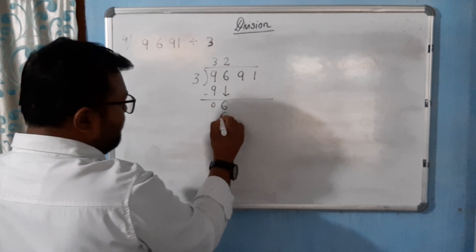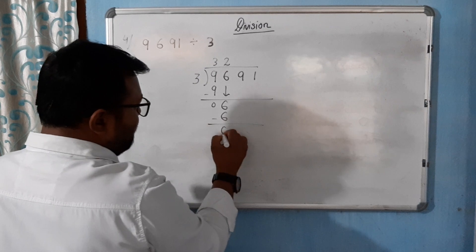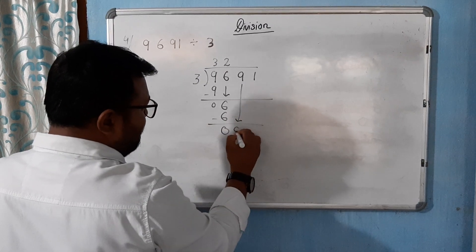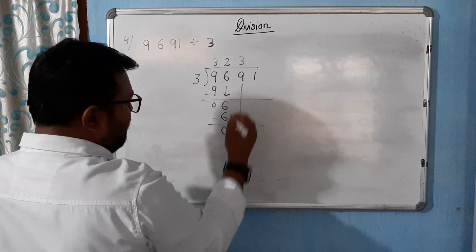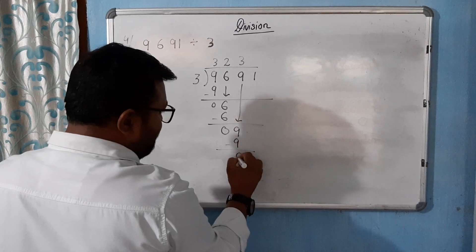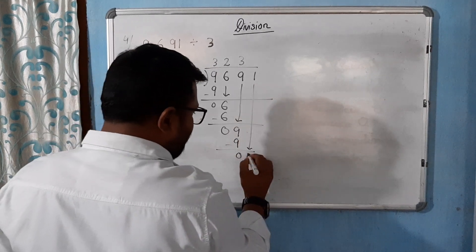This 9 will come down. 3 into 9 is 3, 9 minus 9 is 0. This 1 will come down.